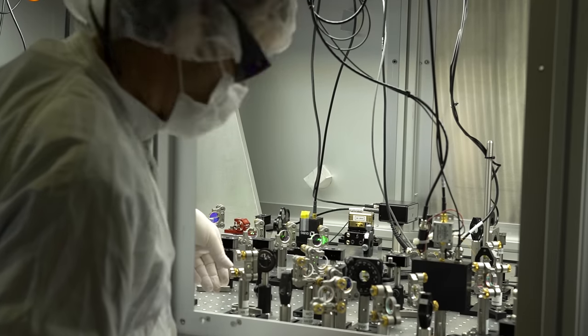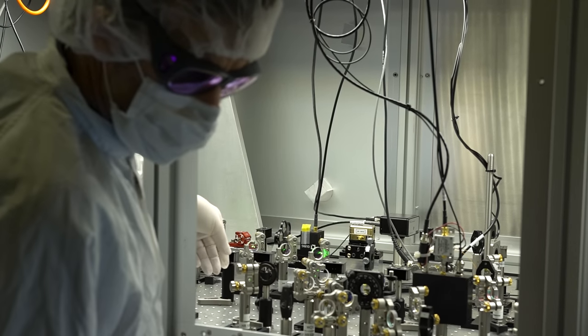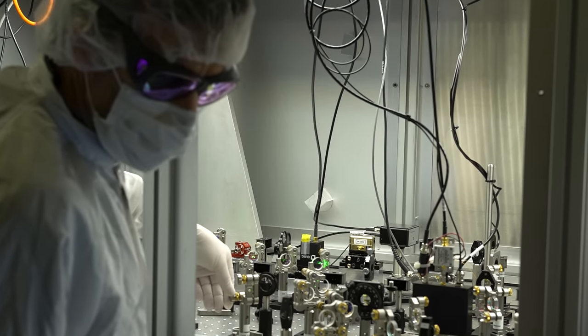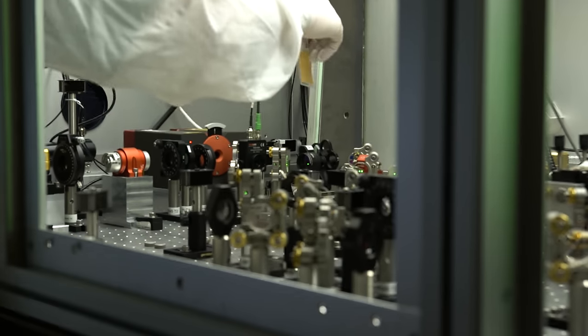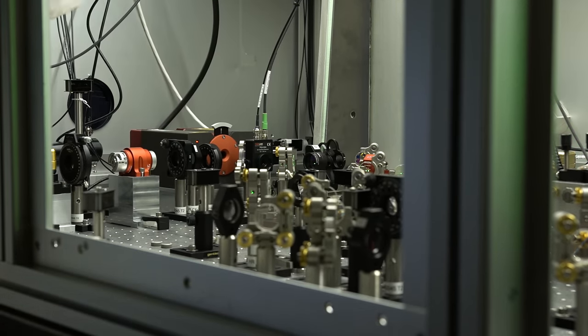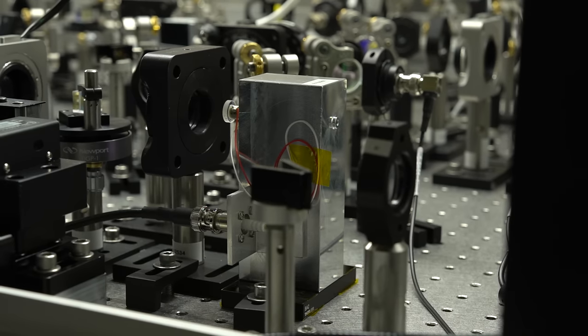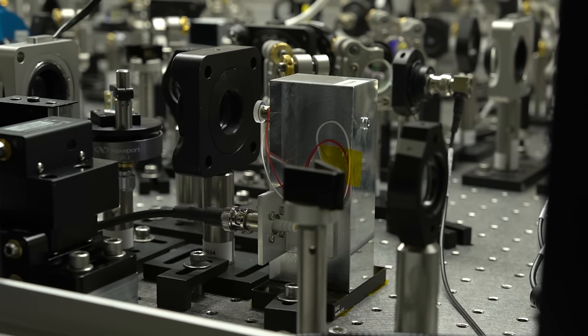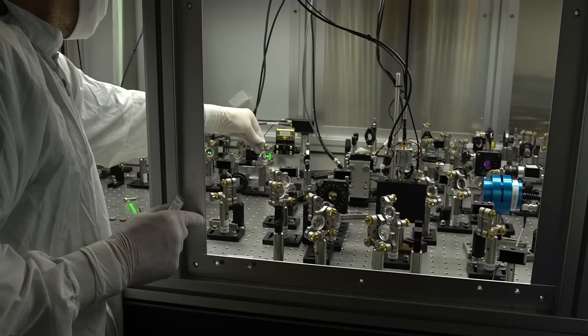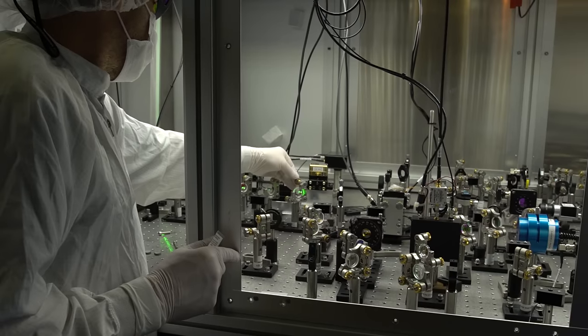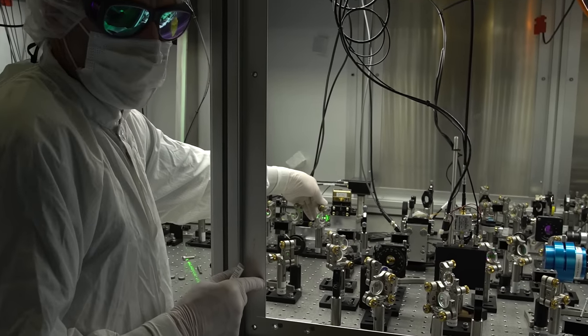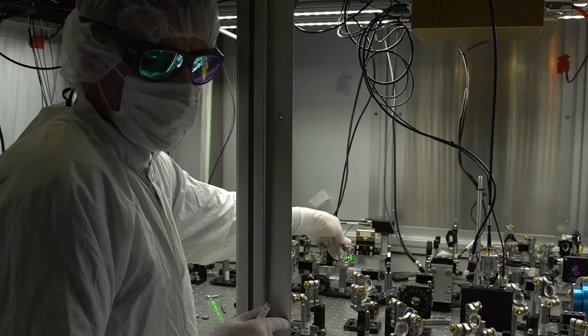They're using a KTP crystal, potassium titanyl phosphate crystal. This is able to transform one green photon into two infrared photons or vice versa. Energy is conserved here because the infrared light has less energy than the green light. What they do here is pump a crystal full of infrared light. This is just to get a lot of green light, and high powered infrared lasers are easier to get.